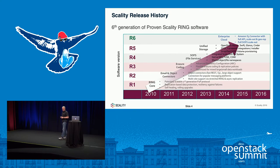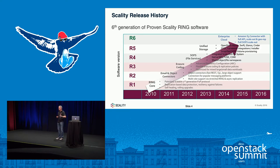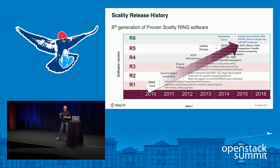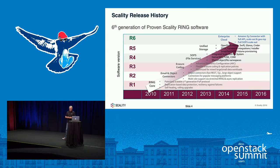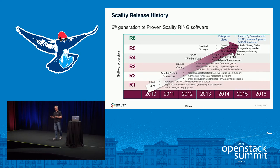We're in the sixth generation release of our software, so it's a mature product. As time went on from 2010, the product has evolved — we continually added new features, enhancements, and new capabilities. Features like erasure coding and file services have been in the product for four or five years, so they're very mature, reliable, and resilient.